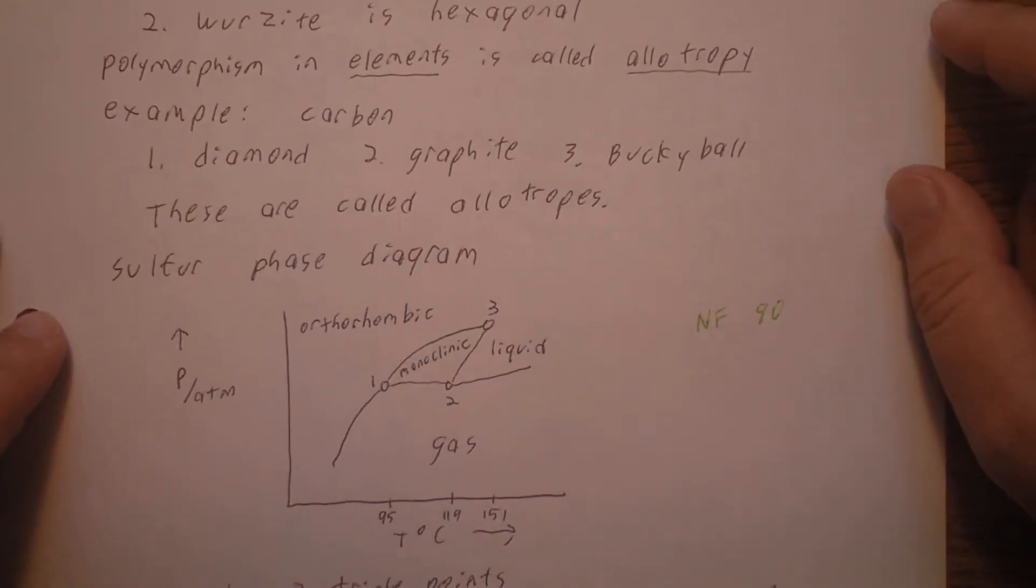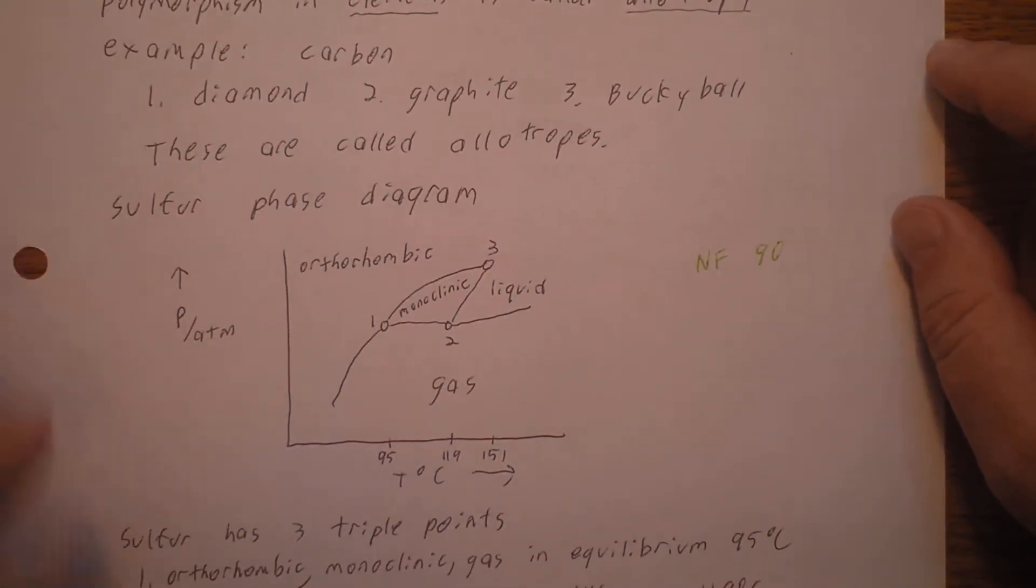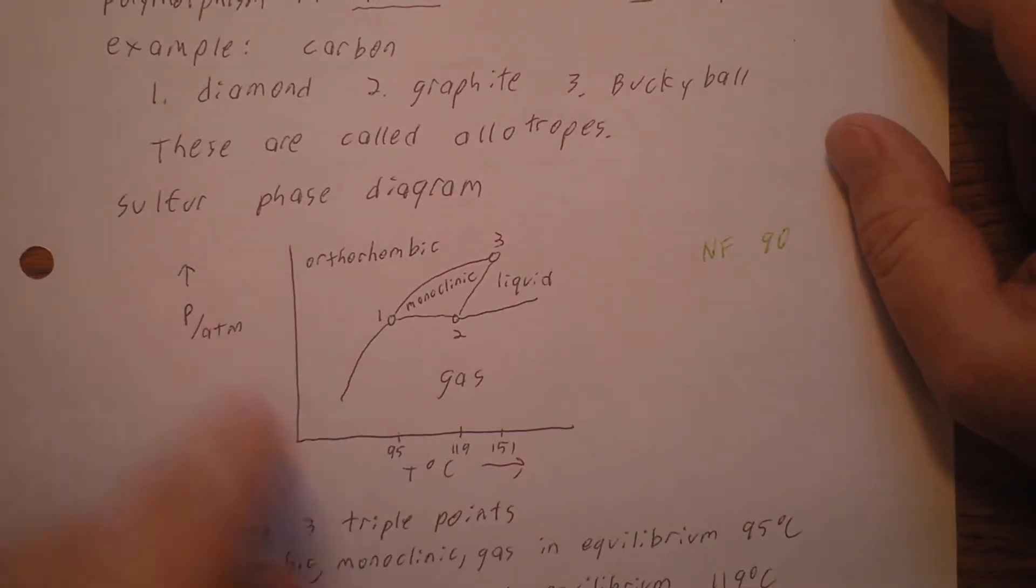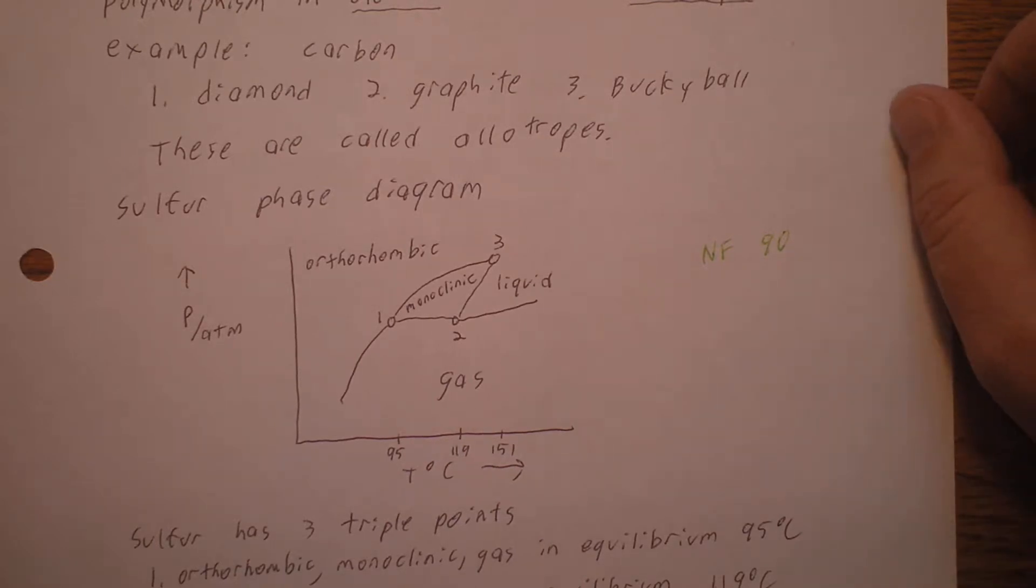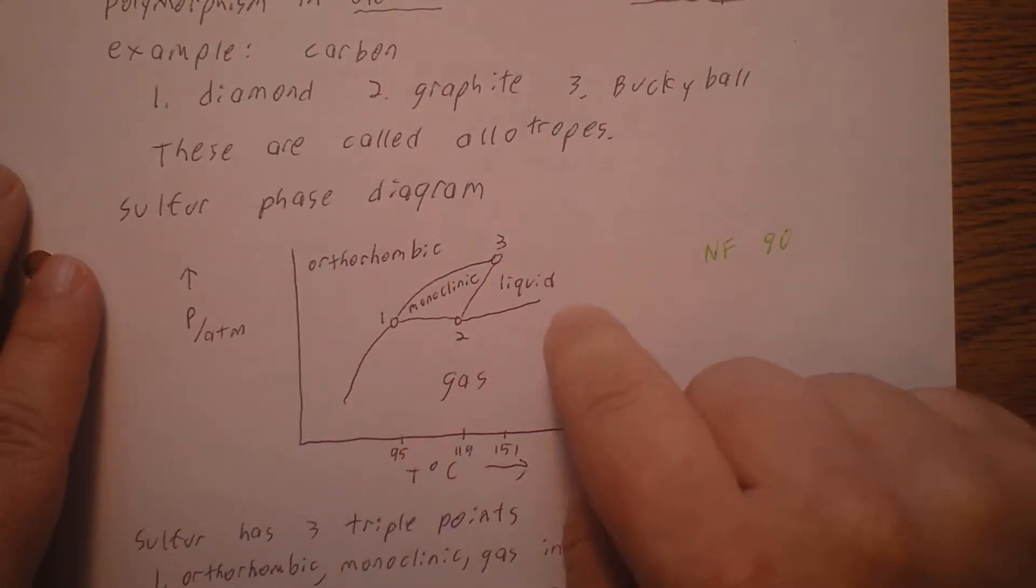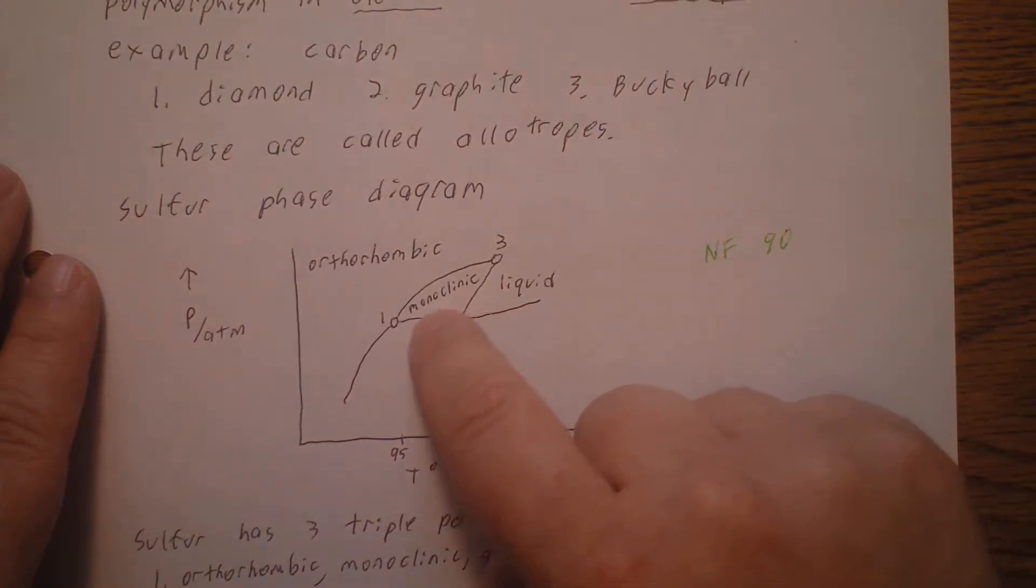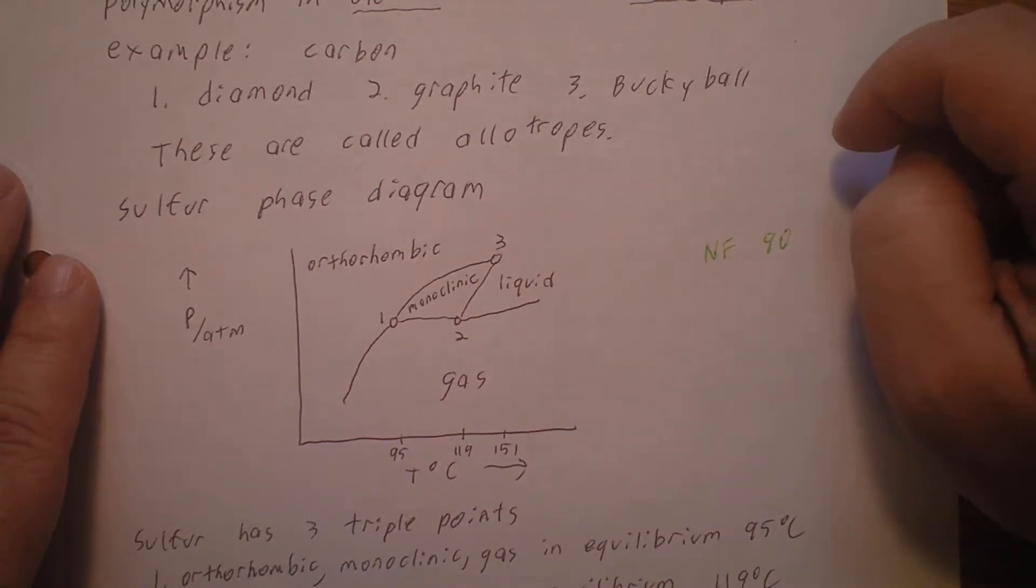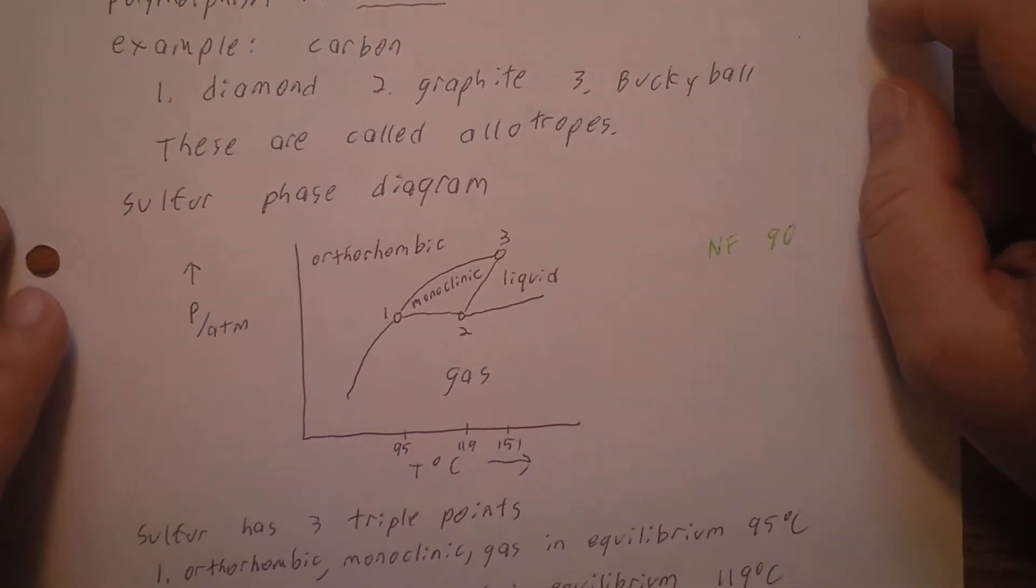Now let's look at the sulfur phase diagram. Here's pressure on the vertical axis divided by atmospheres to get rid of the unit. Here's temperature in degrees Celsius. Notice down here we have the gas at lower pressure and higher temperature. At higher pressures we have the liquid. In here we have a solid form called monoclinic, and out here we have a solid form called orthorhombic.